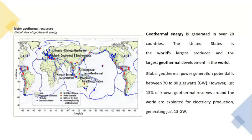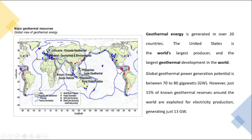Regarding the global scenario, about 20 countries around the world generate geothermal energy. The USA is one of the largest producers because it has a very large area. Iceland has the highest proportion of electricity generated from geothermal energy, as tectonic plates meet there. The Ring of Fire around the Pacific Ocean has active volcanoes and the best geothermal potential — up to 70 to 80 gigawatts. About 30 gigawatts have been identified and exploited so far.